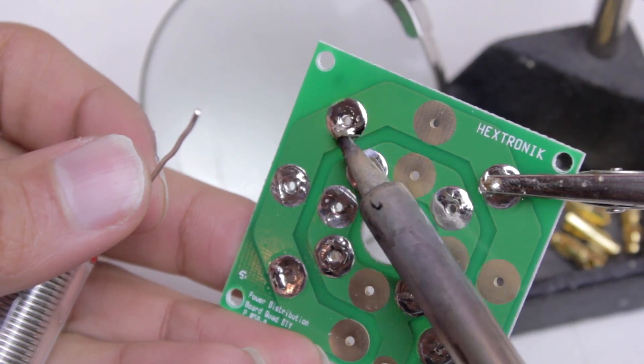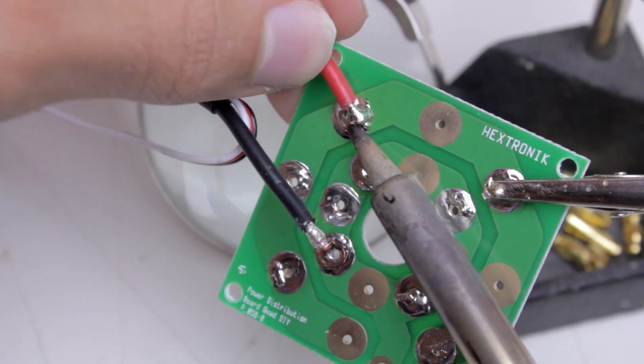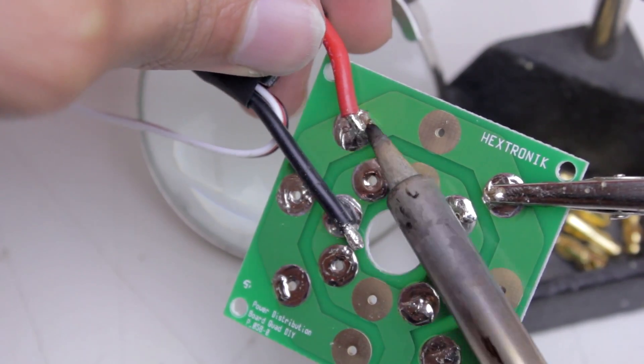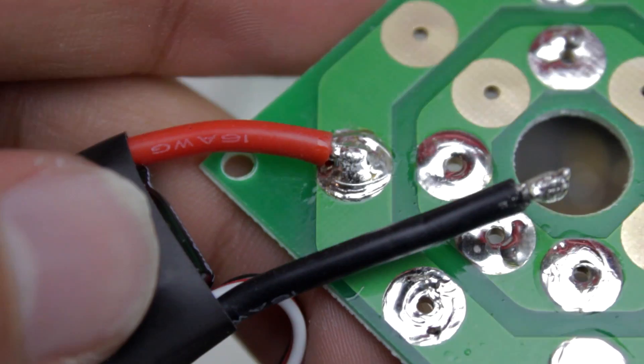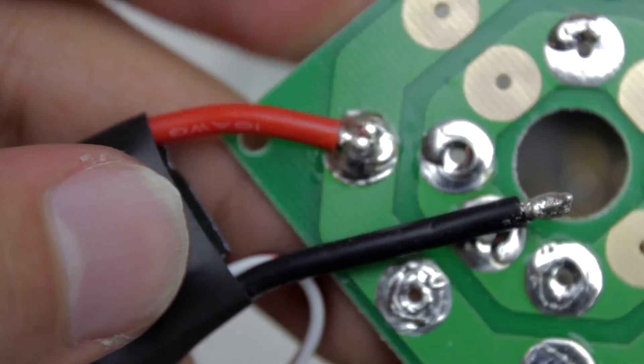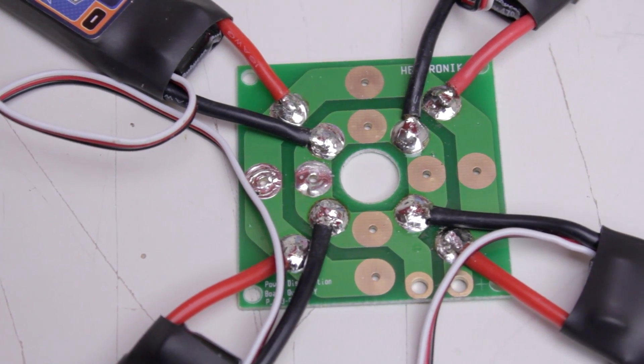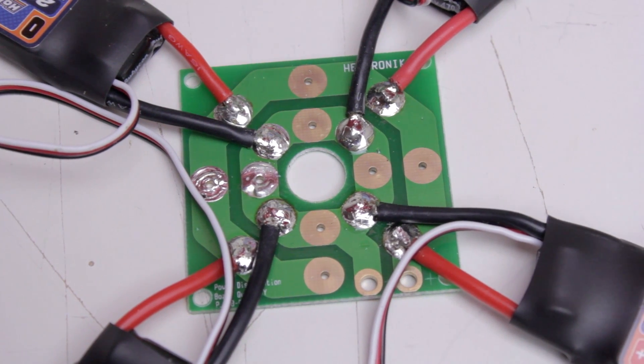Now we just have to heat up the connections on the power distribution board while at the same time heating up the wires for the ESCs, trying to coat everything in solder. Make sure your connection is strong by pulling in different directions on the wire. If you hear any type of popping or cracking then that means you have what's called a cold soldering joint. If that's the case then you should re-solder the connection.